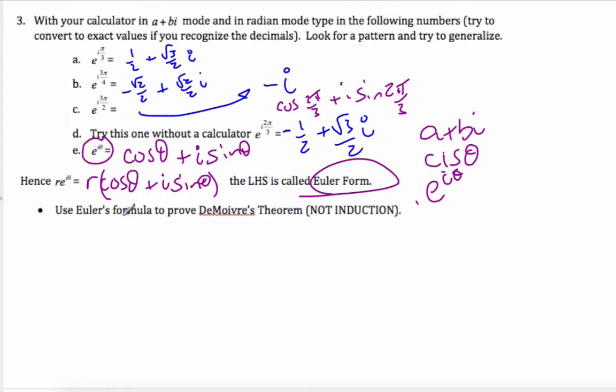We want to use Euler's form to prove DeMoivre's theorem. What DeMoivre's theorem says, if we remember, is that r cis θ to the power n is equal to r to the n, cis nθ. So I'm going to start with r cis θ to the power n.